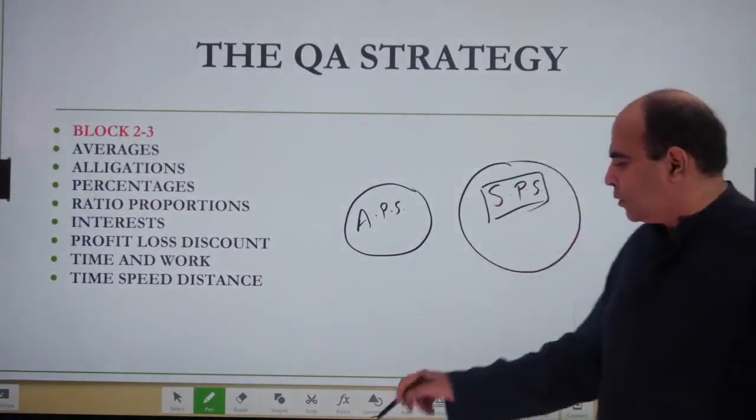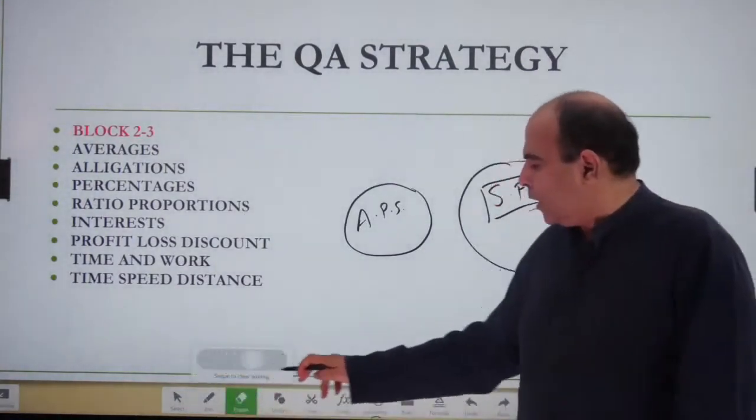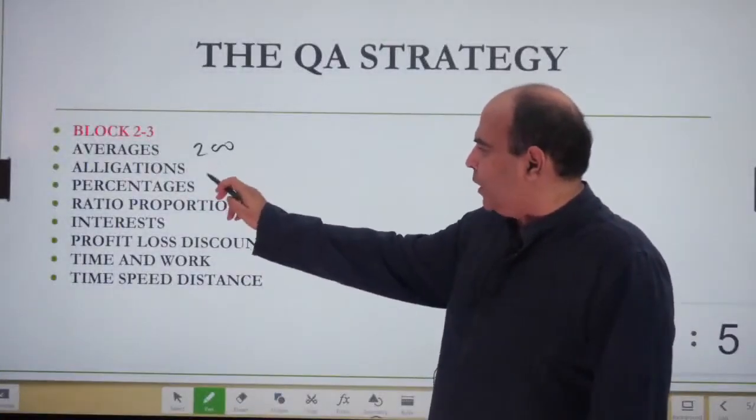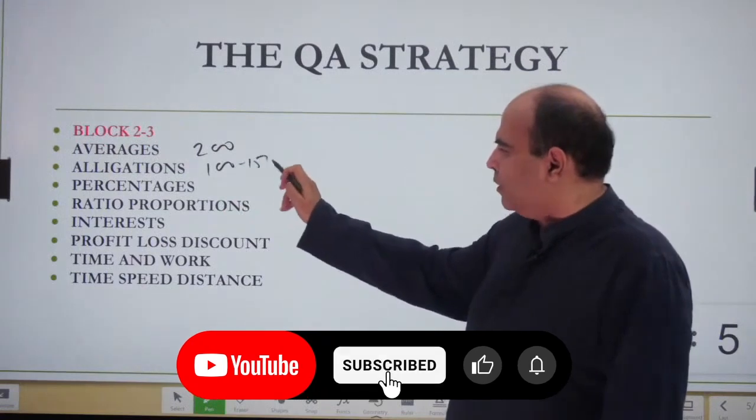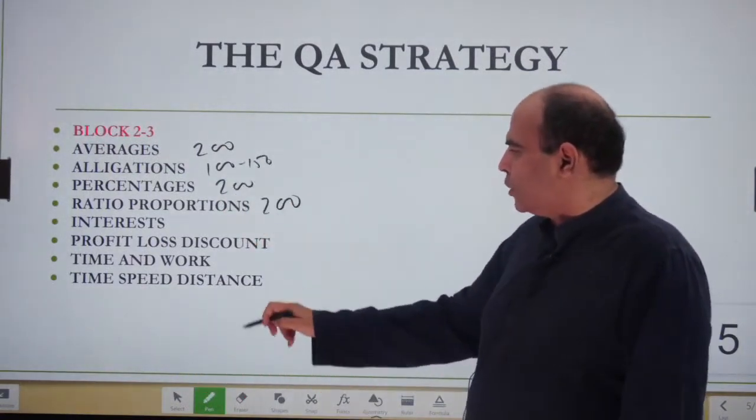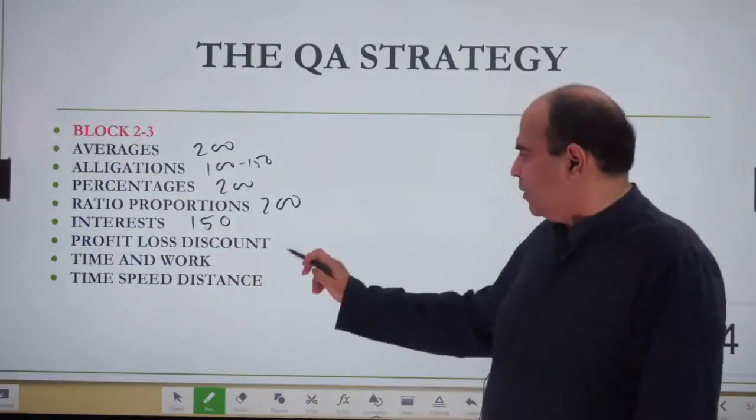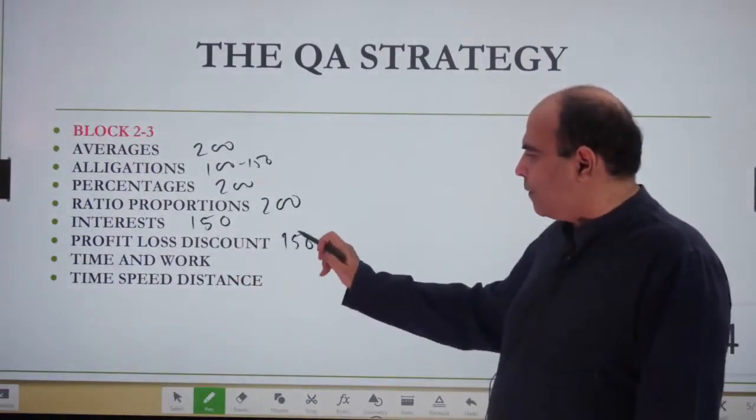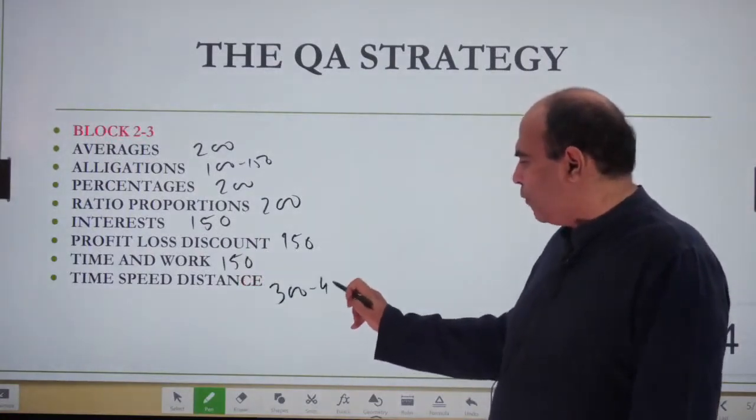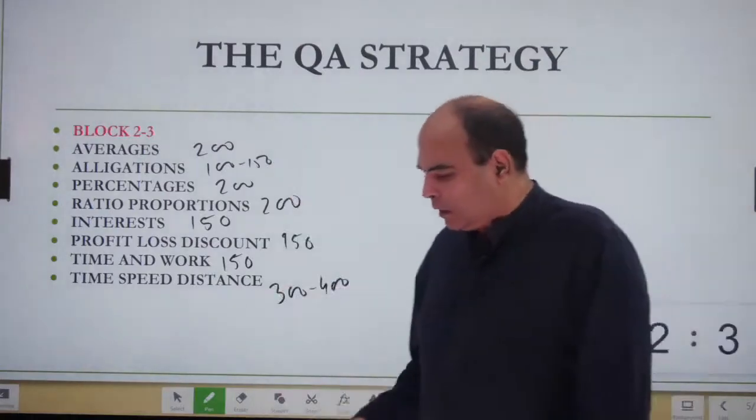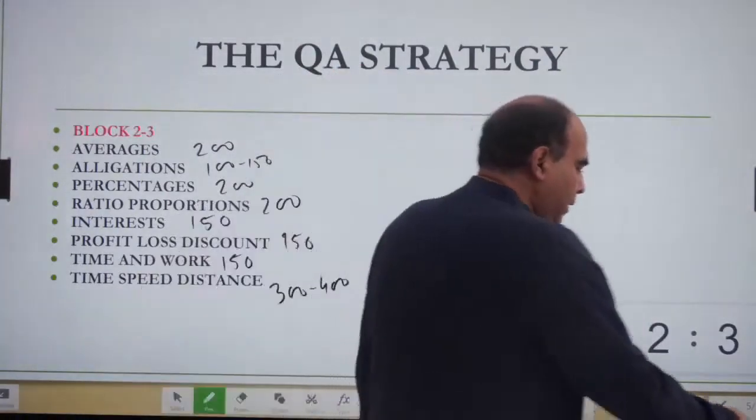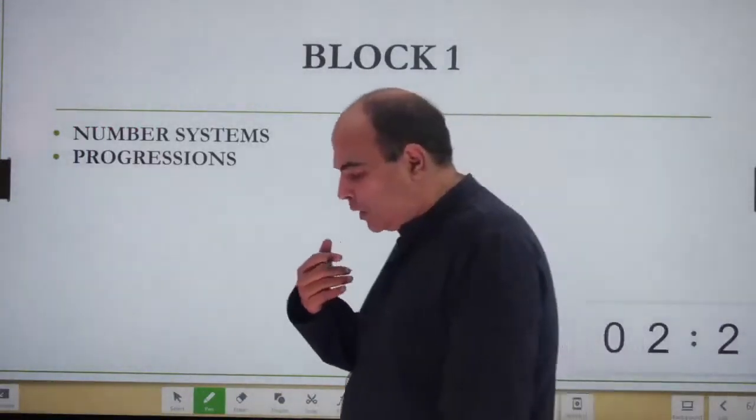The numbers I'm giving you are essentially self problem solving numbers. Averages is a 200-question chapter, allegation is 100-150, percentages is 200, ratio proportion is 200, interest is 150, profit loss is 150, time and work is 150. Time-speed-distance is around 300-400 questions. This is the number of questions you need to solve on your own in these chapters.